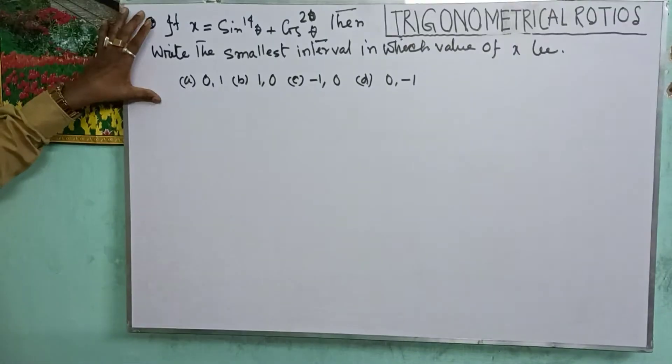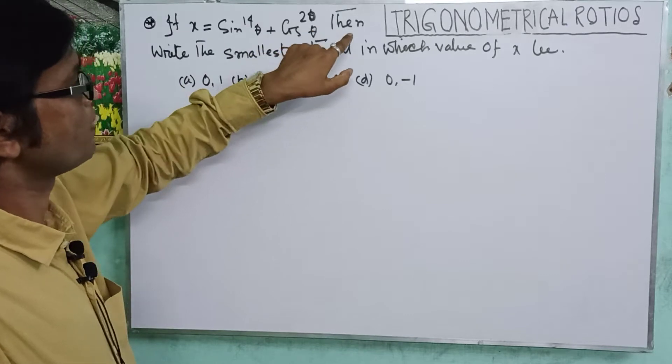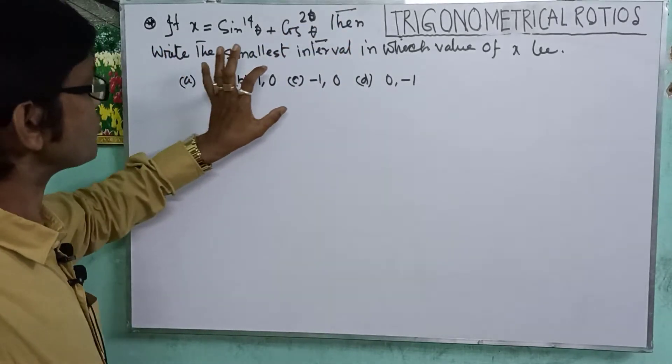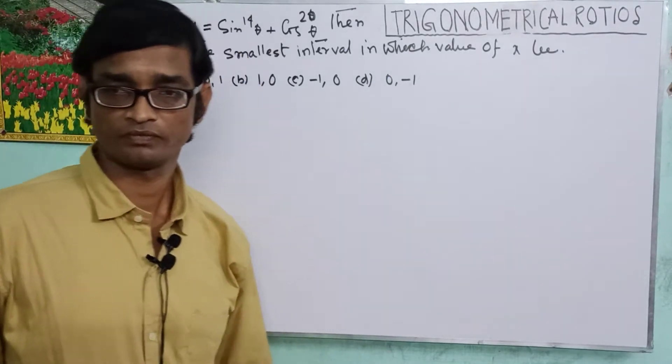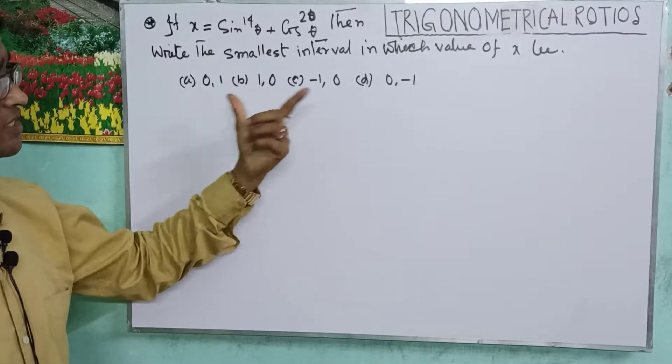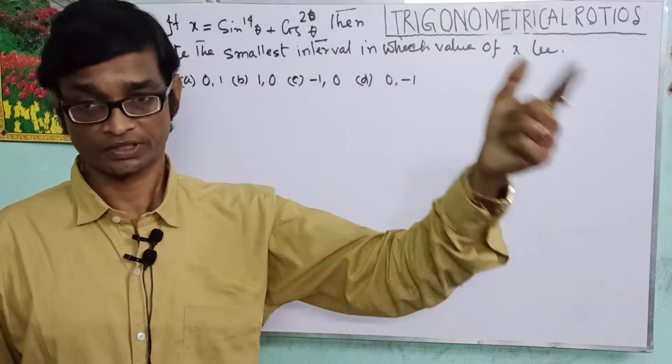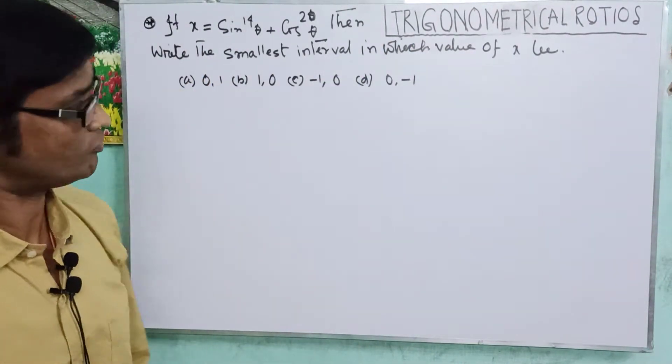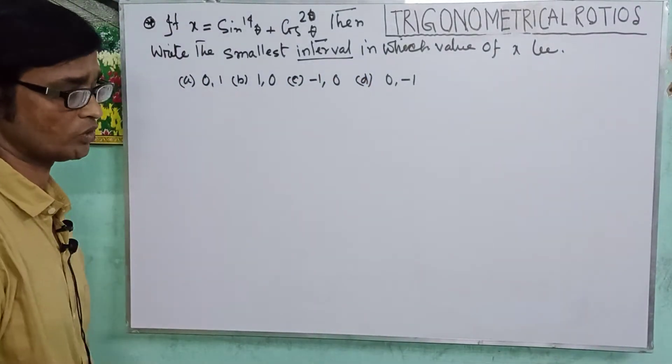If X is equal to sin squared 14 theta plus cos squared 20 theta, then write the smallest interval in which value of X lies. Interval means the range - the start and end values including all the values in between. That's called an interval.